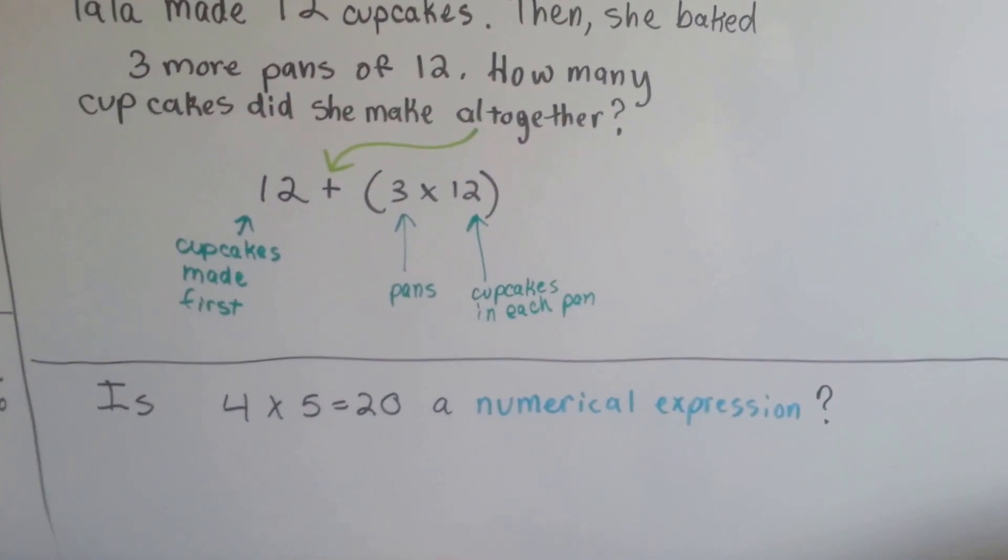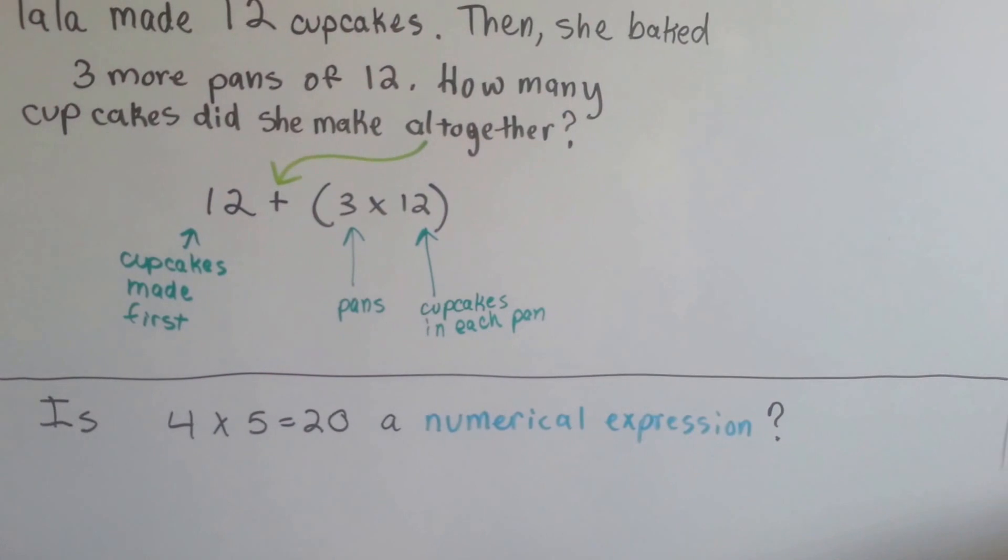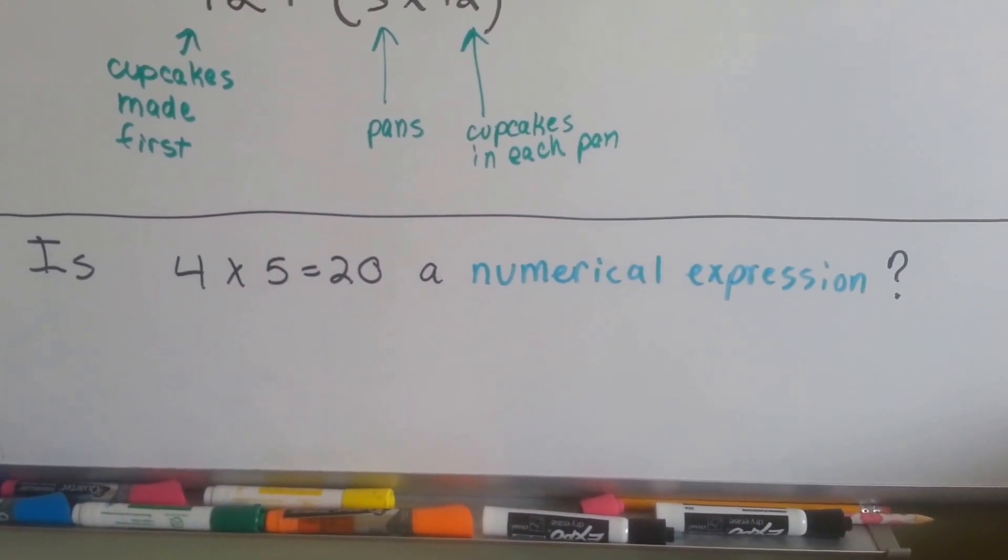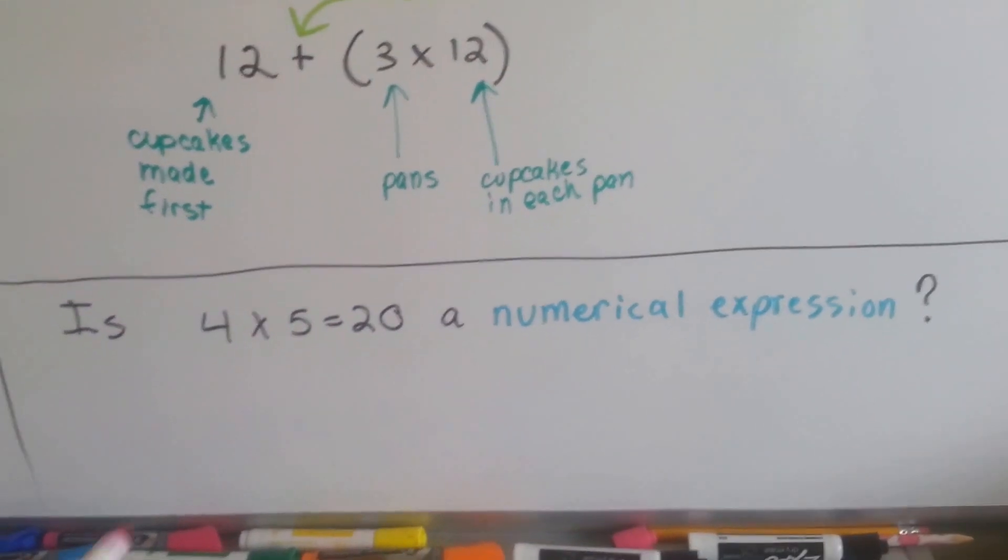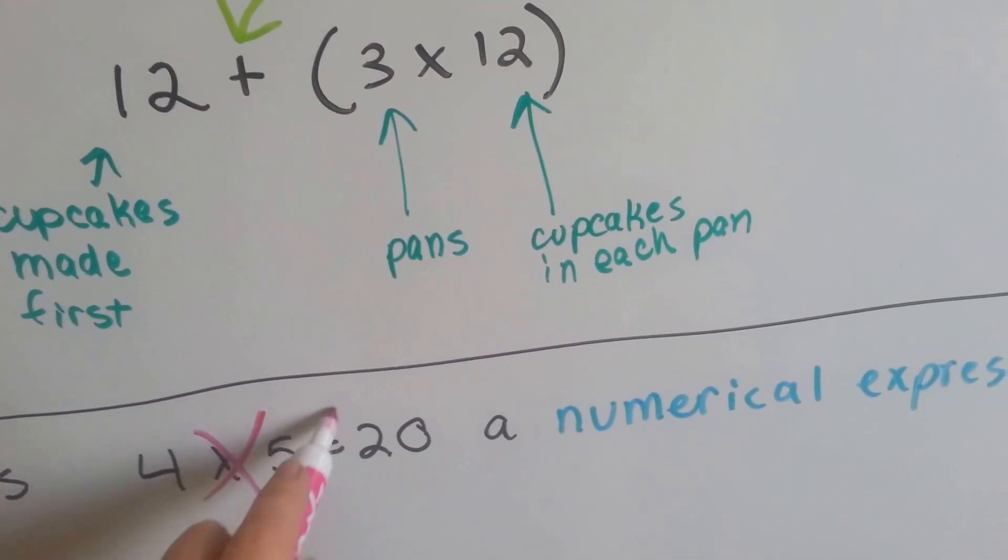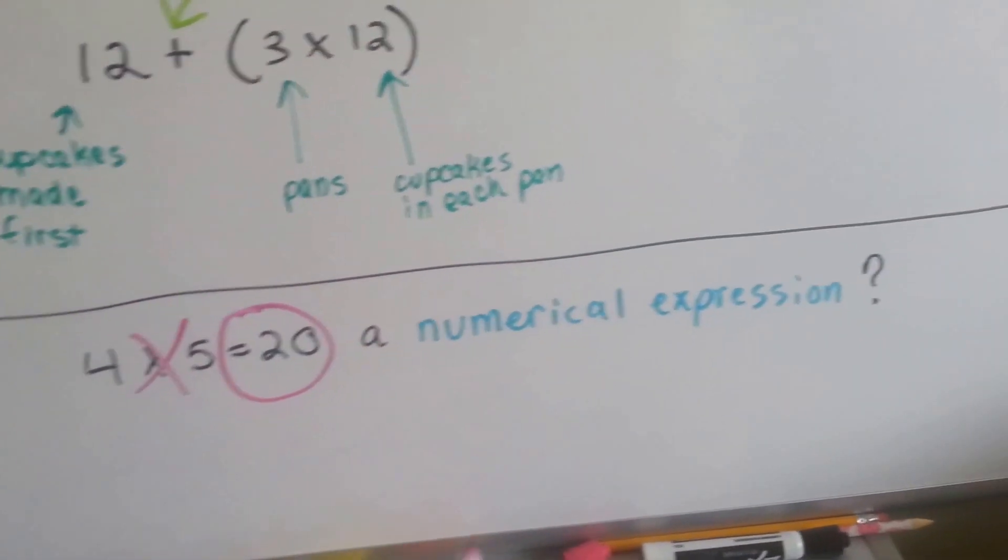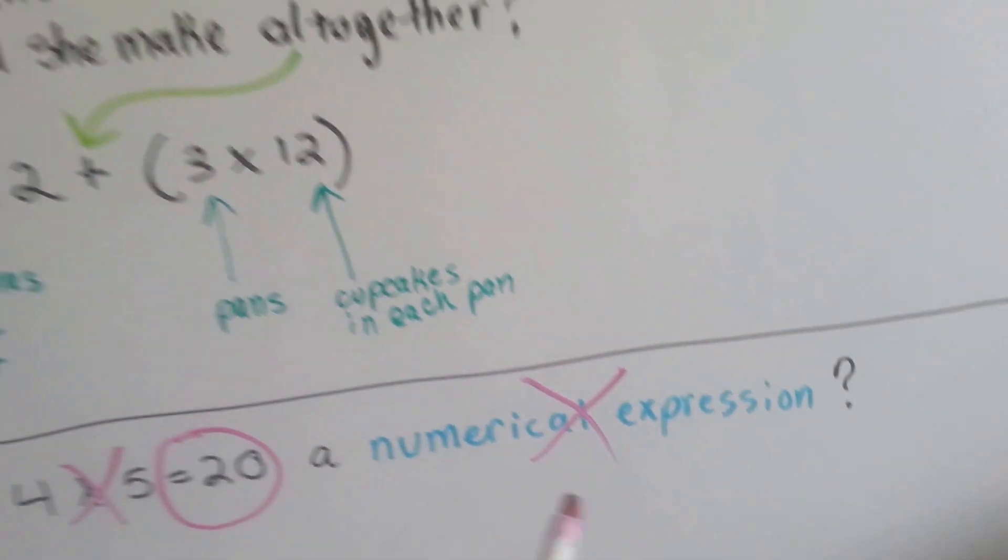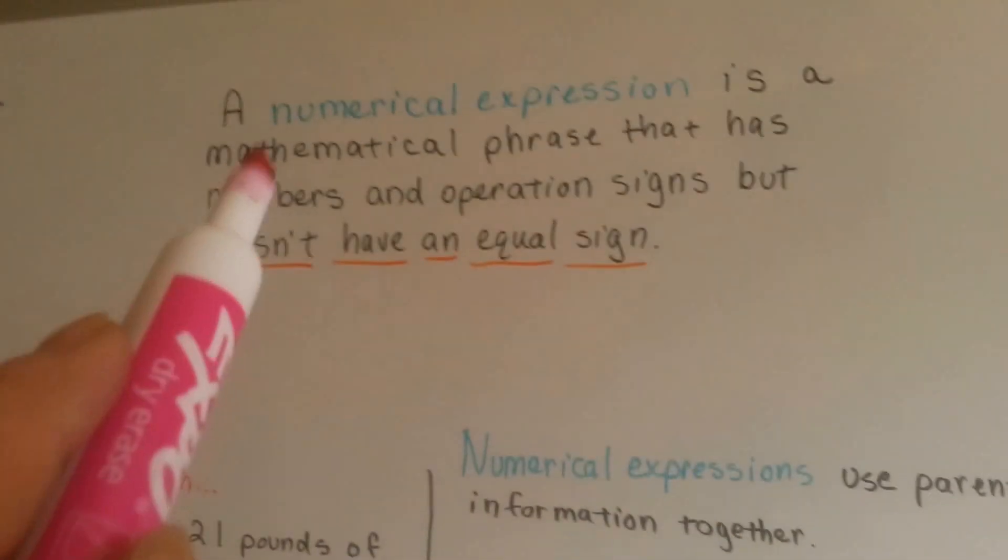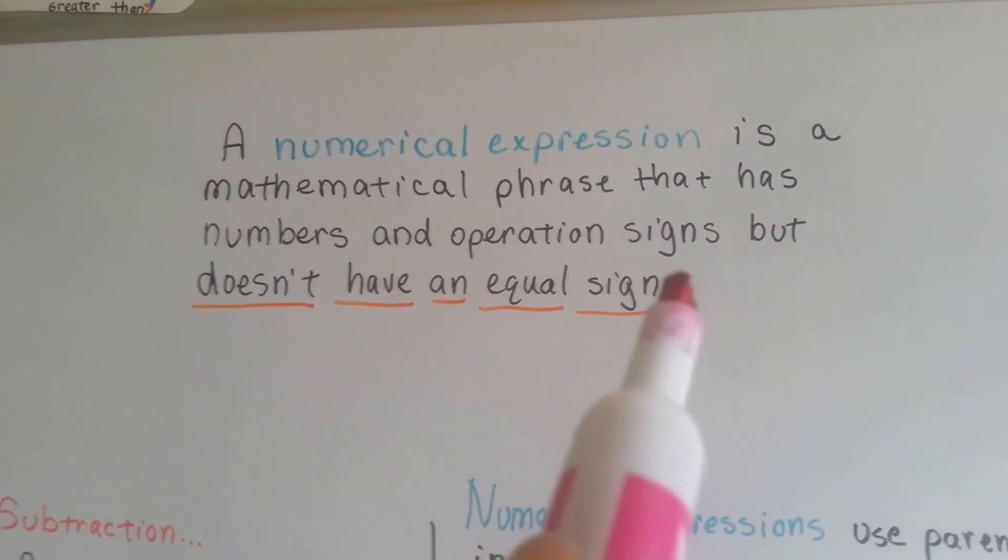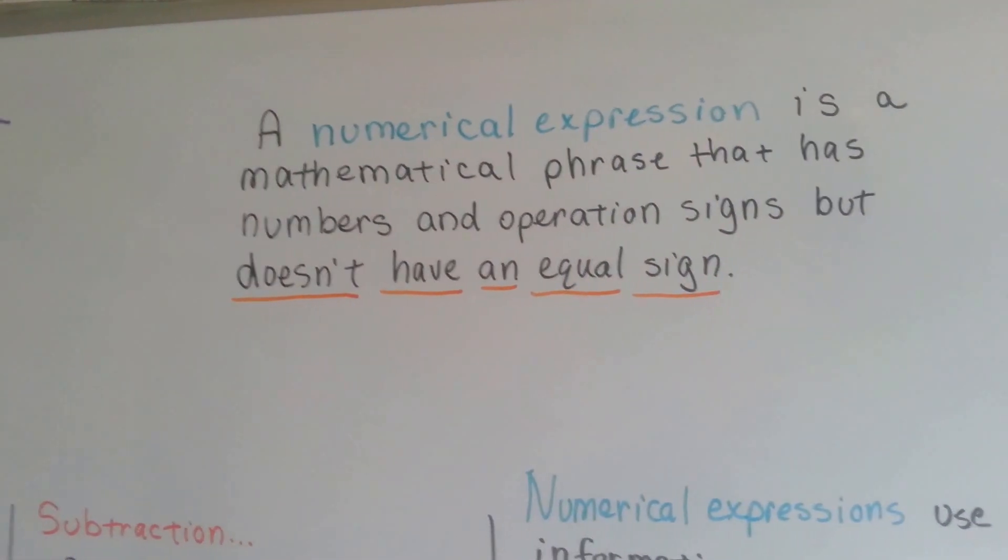How about this? Is 4 times 5 equals 20 a numerical expression? Is that a numerical expression? No. And do you know why? Because it's got an equal sign and an answer. It is not a numerical expression. Remember, a numerical expression does not have an equal sign. It has numbers and operation signs but no equal sign.